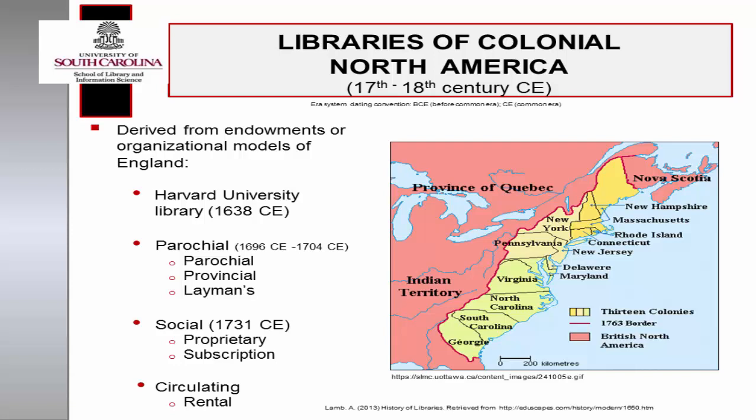The Charleston Library Society in South Carolina was the third subscription library of the colonies, established in 1748 CE. Circulating or rental libraries were operated by booksellers or printing shops and charged fees for borrowing books. For the remainder of this segment, I will focus on public libraries in the United States, and recommend you read the text for information regarding national, academic, and special libraries.